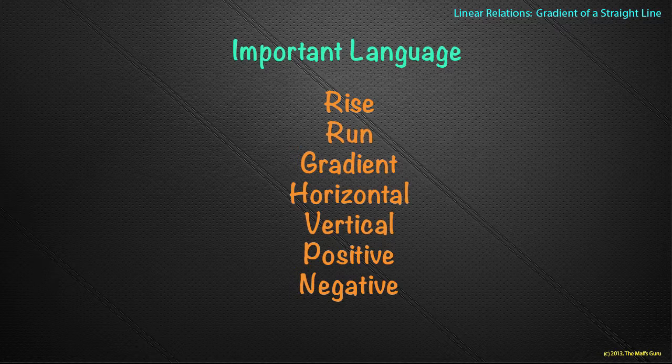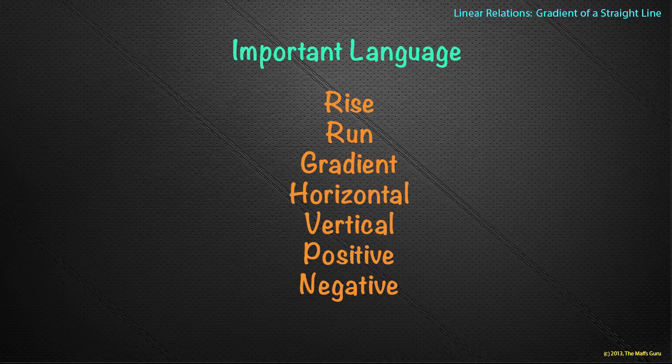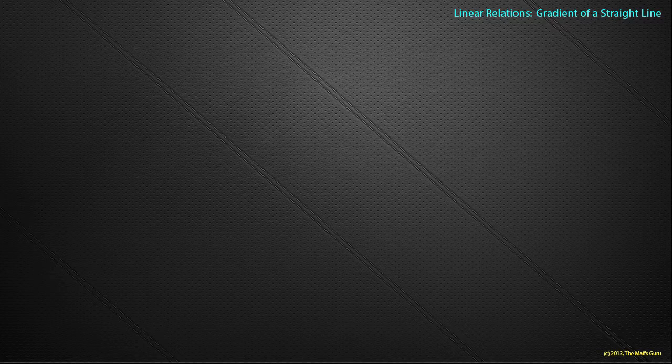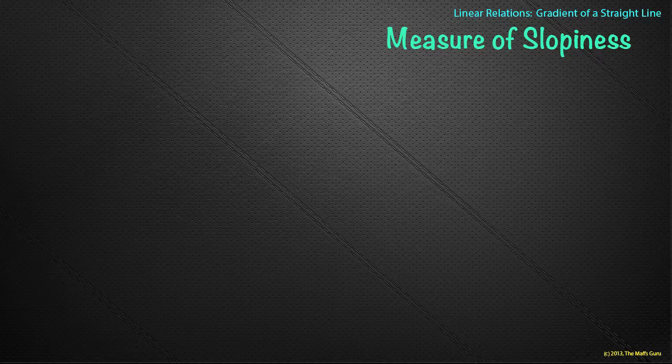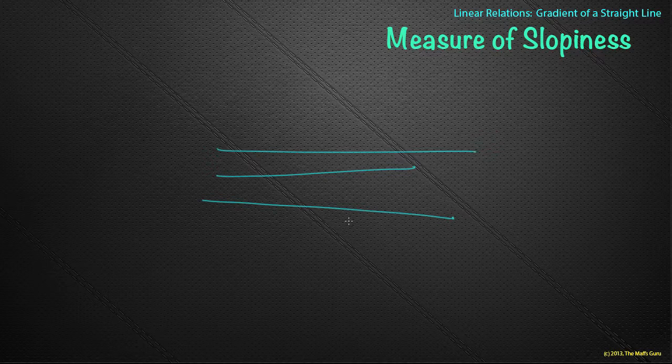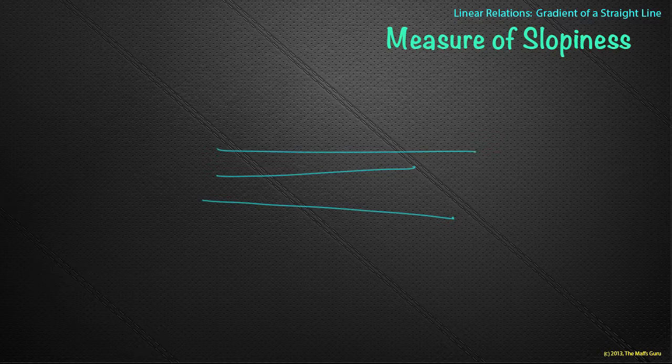Maybe we'll talk about important language before I go any further. So, rise, run, gradient, horizontal, vertical, positive, negative, all words that we may necessarily need to use. Write those down. Actually, don't write them down. You can always come back and look at the video later. So, let's look at the idea of slopiness. Now, actually, I just said a moment ago from that previous slide that if we look at the idea of the lines I drew, there is one that seems to be sloping up, one that seems to be sloping down, and one that seems to be pretty straight as much as it can possibly be. So, this slopiness seems to be quite important.